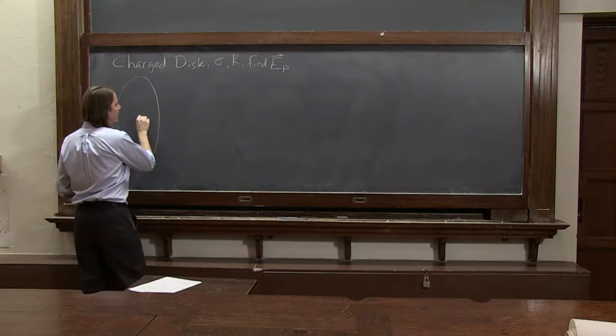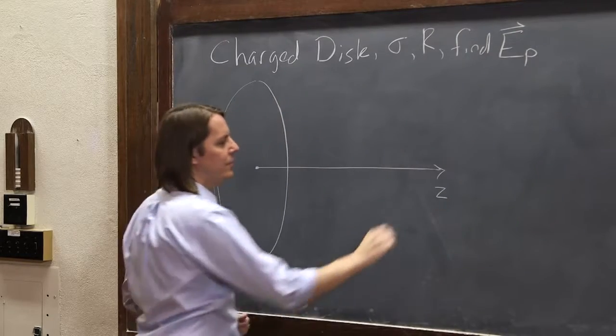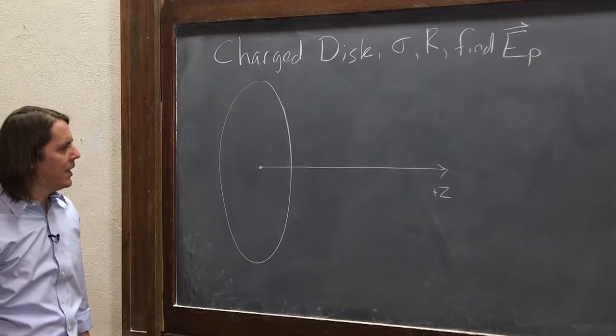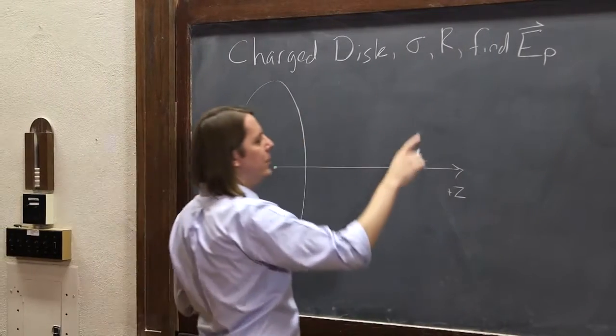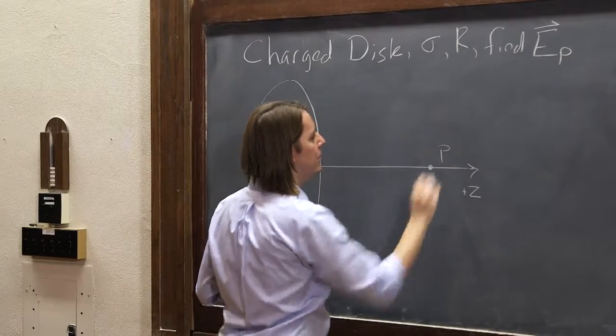And we're going to put its center on the z-axis coming out this way. So there's the z-axis. We can assume its origin is at the center. So we're looking for the e-field at a point on the origin, or along the z-axis, point P, like that.